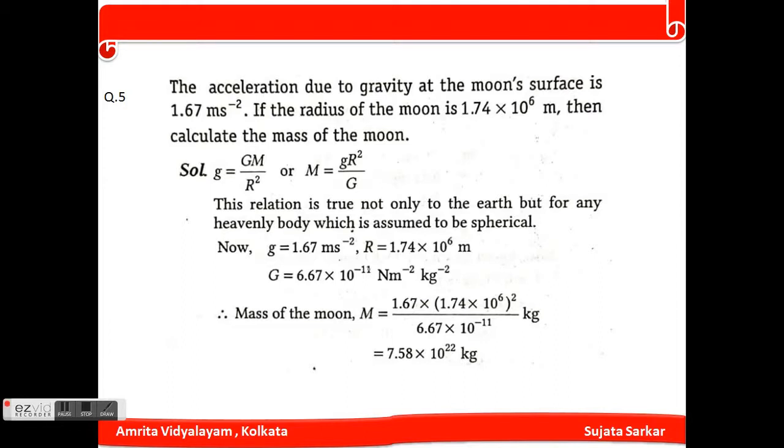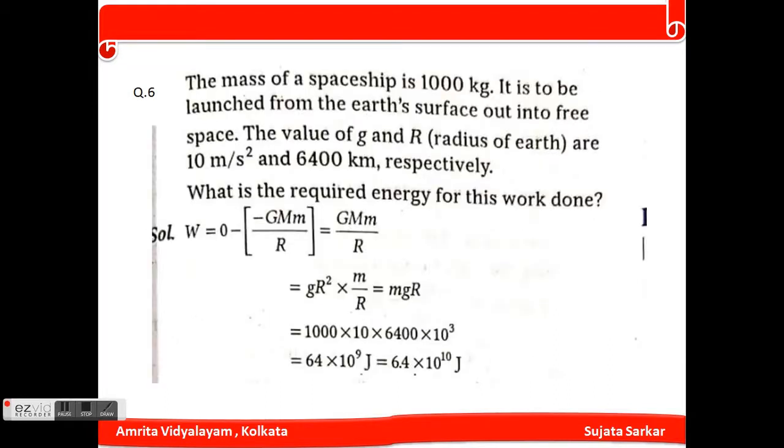Here small g equals 1.67 m/s², capital G equals 6.67 × 10⁻¹¹ N·m²/kg². Mass of the moon M equals 1.67 times (1.74 × 10⁶)² divided by 6.67 × 10⁻¹¹, which equals 7.58 × 10²² kg.